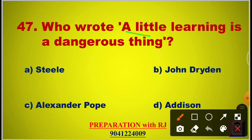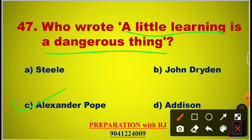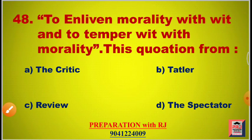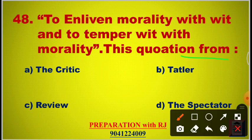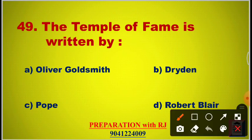Question 47: Who wrote 'A little learning is a dangerous thing'? The answer is C, Alexander Pope, in his work An Essay on Criticism. Question 48: 'To enliven morality with wit and to temper wit with morality' — this quotation is from — options are The Tatler, The Character Review, The Spectator. The answer is D, The Spectator. This quotation is by Addison.